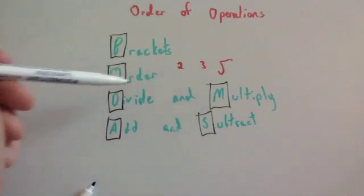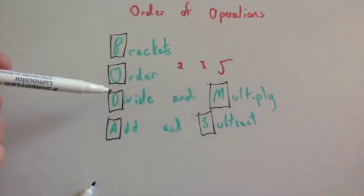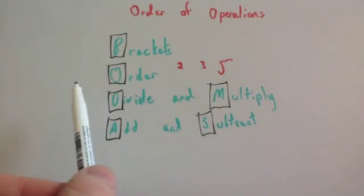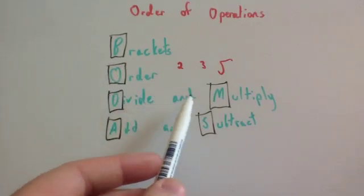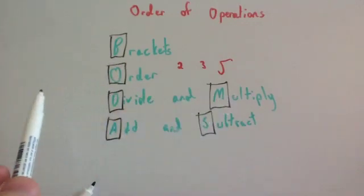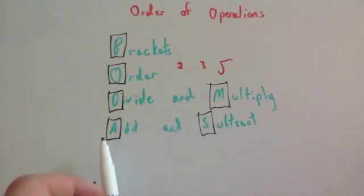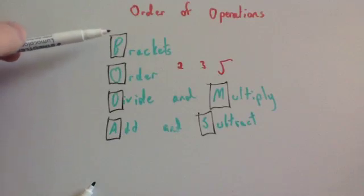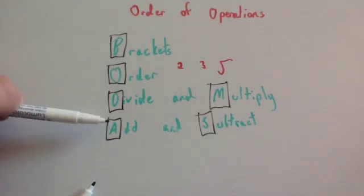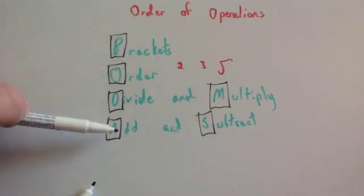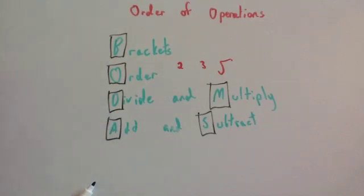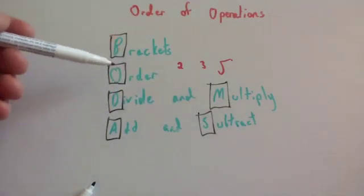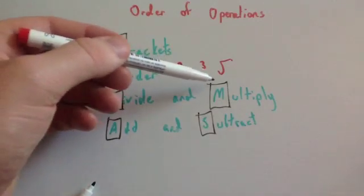Notice that division and multiplication are on the same level, because dividing by 5 is the same as multiplying by 0.2. So if you have a sum with just division or multiplication, you work from left to right. Likewise, if you have just addition and subtraction, you work from left to right. But if you had brackets and an addition, you'd do brackets first, then addition. Or if you had a squared, then a multiply, then an add, you'd do the squared, then the multiply, then the add.